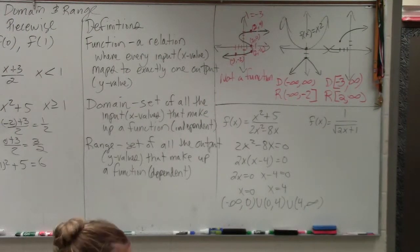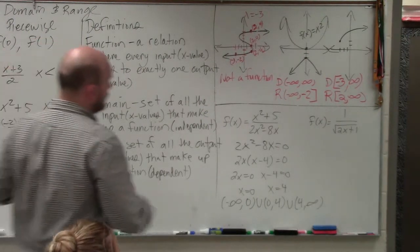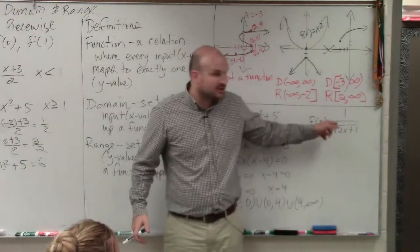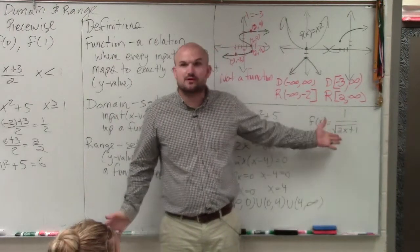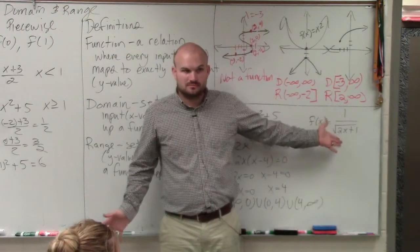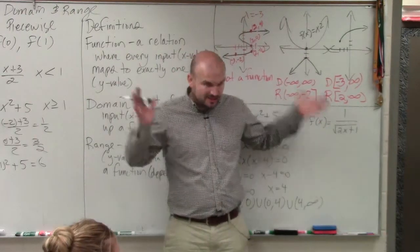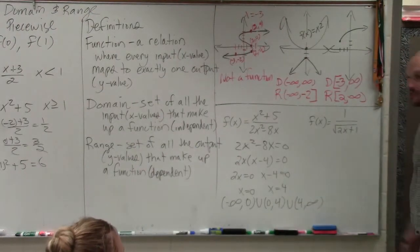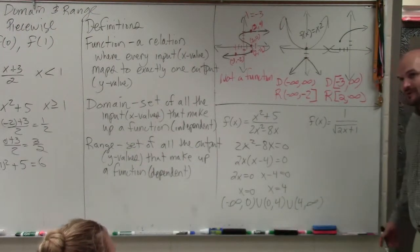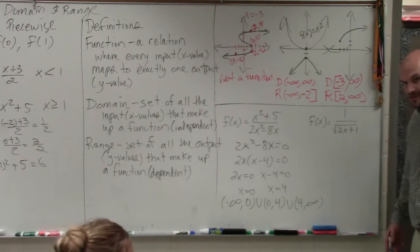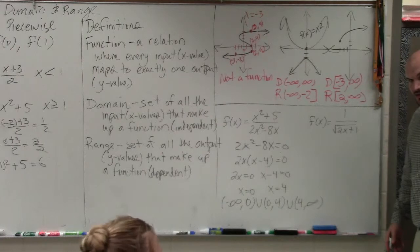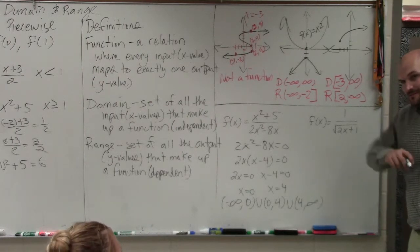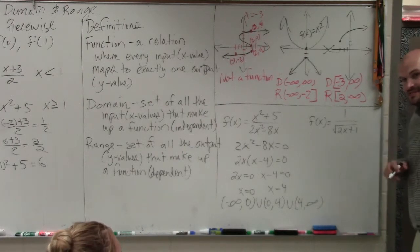So in the last one, we know that the denominator cannot equal 0, right? Denominator cannot equal 0, so we got that. But there's also one other function that's special about this. If you guys can all look up here and take a look, there's something very, very important to see.